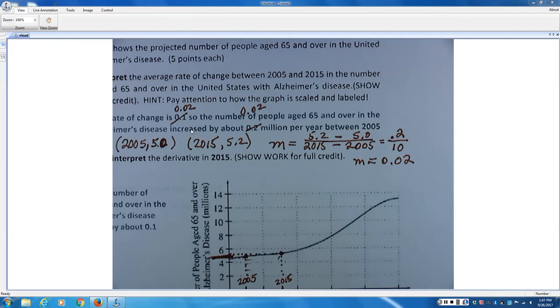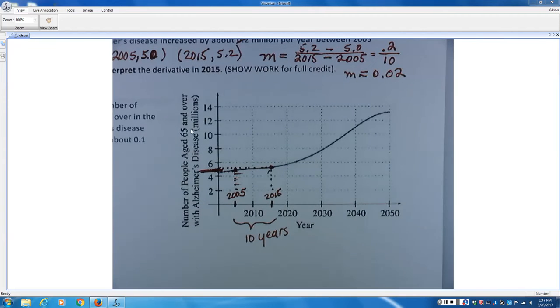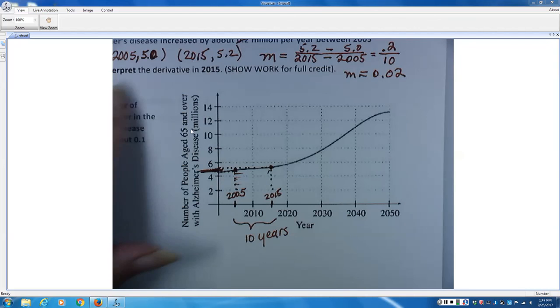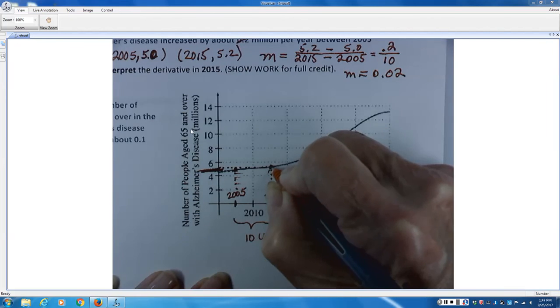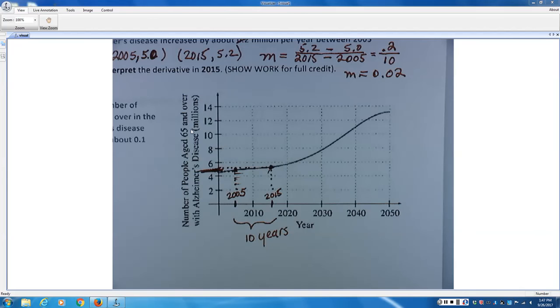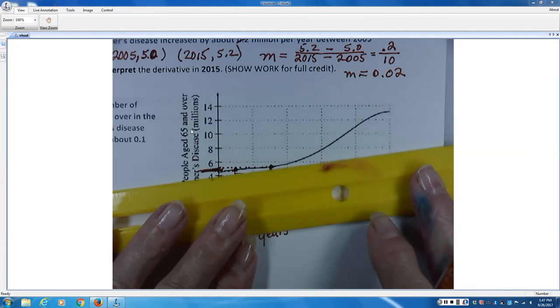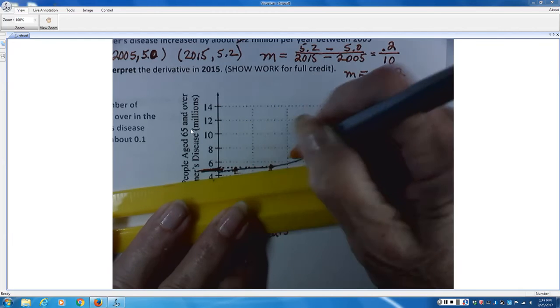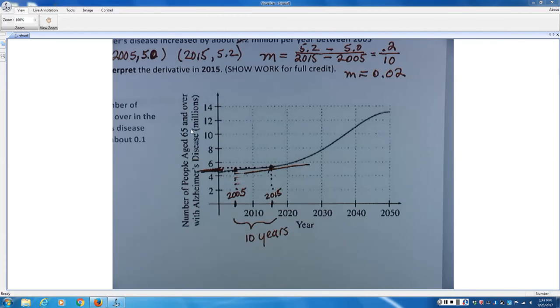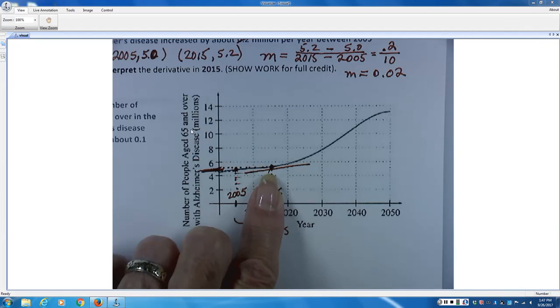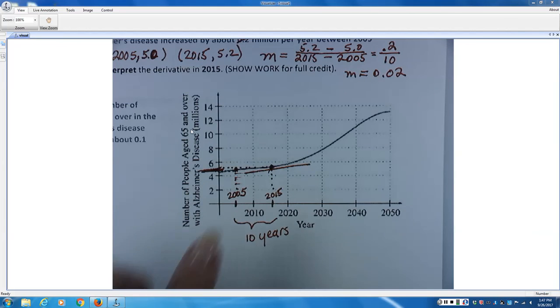Now, the difference in the secant line and the tangent line, this is going to get a little messy here, is that it says interpret the derivative in 2015. Okay, here's 2015. What I want to do is find the slope of a tangent line to that curve at 2015. So I draw the very best tangent line that I can. Mine actually is not quite touching the curve. It should be, but I'm drawing the best one I can, so you draw the best one you can.